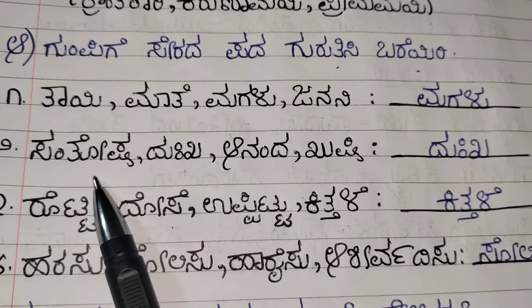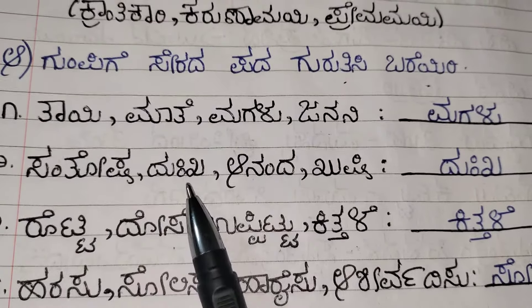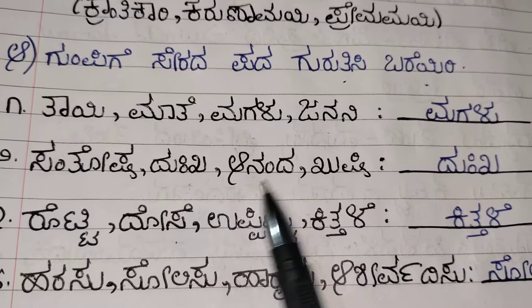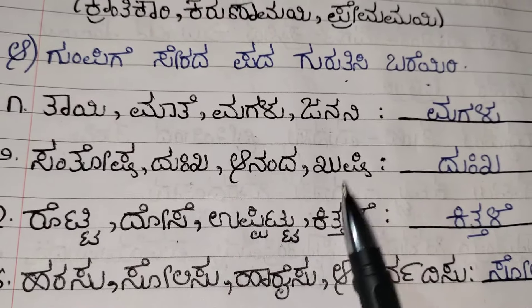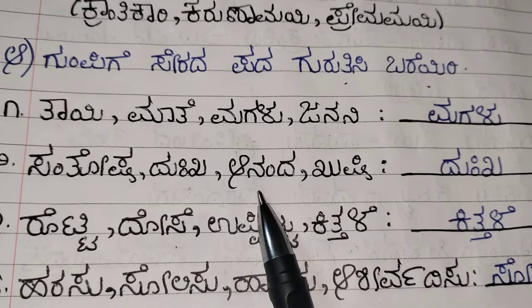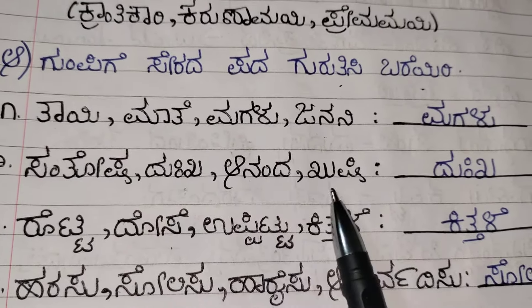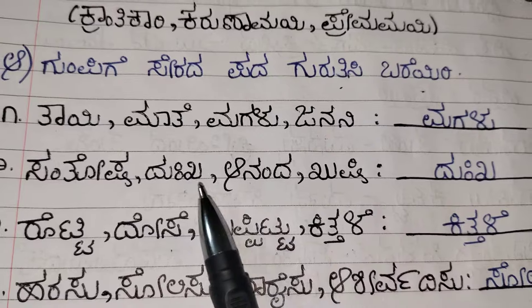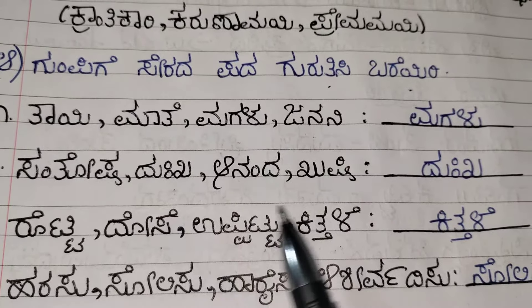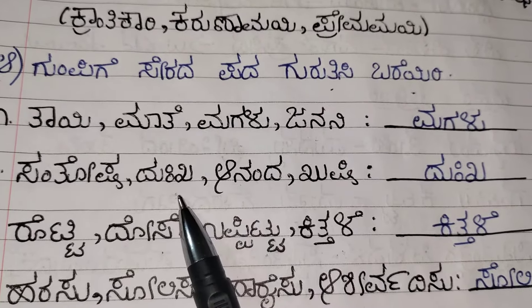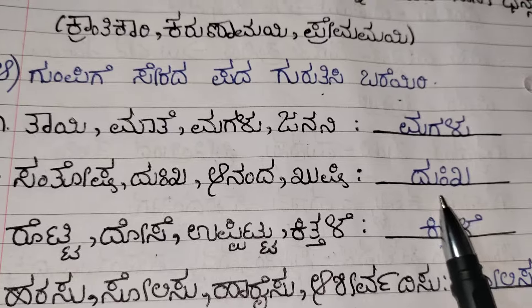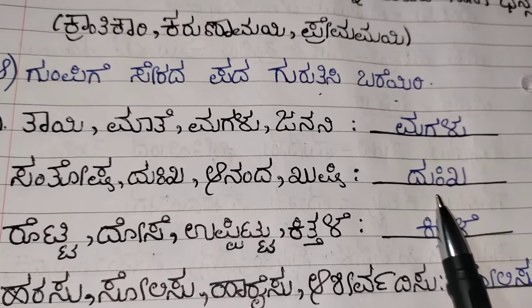Second one: Santosh, Dukkha, Ananda, Kushi. Santosh, Ananda, Kushi means happy. Dukkha means sad. So here Dukkha is the odd one out.